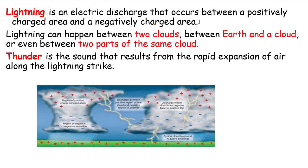Lightning is an electrical discharge that occurs between a positively charged area and a negatively charged area. There is attraction between negative charge and positive charge, so electrons move from the negatively charged side to the positively charged side.